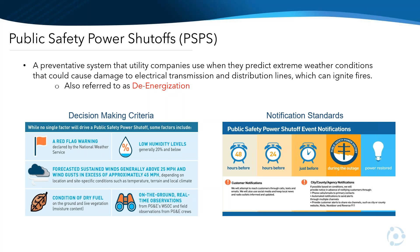No one can really say if a shutoff actually prevented a fire or not. What we can say is the overuse of this tool can create its own problems. De-energization in itself can be dangerous — you have public safety concerns such as loss of traffic signals, power to critical facilities, loss of telecommunications, and home medical equipment. The objective is to allow utilities to de-energize as a last resort, not solely as an effort to reduce their own liability. The CPUC created guidelines to ensure pre-event communication standards are implemented and that de-energization is only used as an emergency measure, exhausting all other fire mitigation options first.